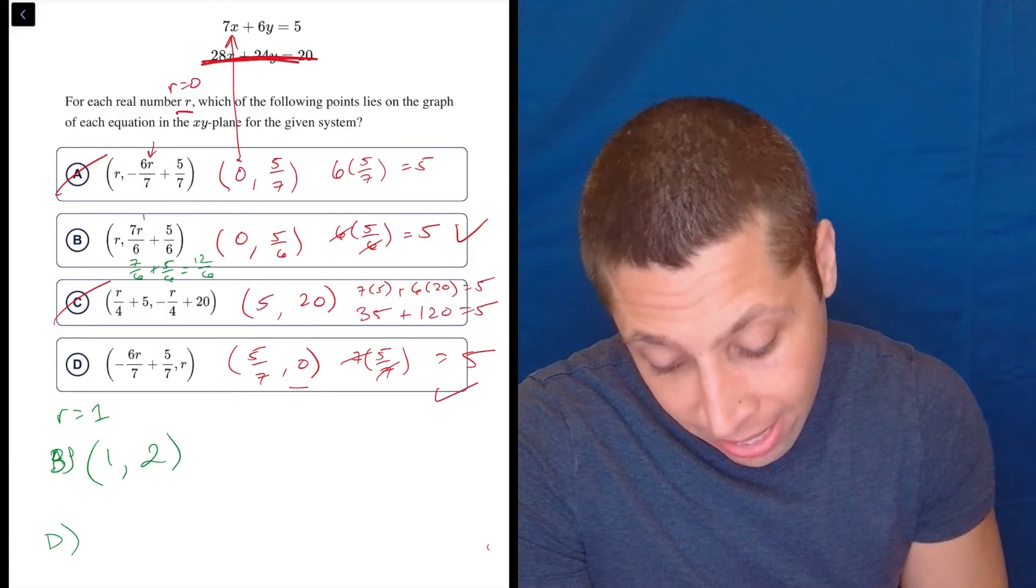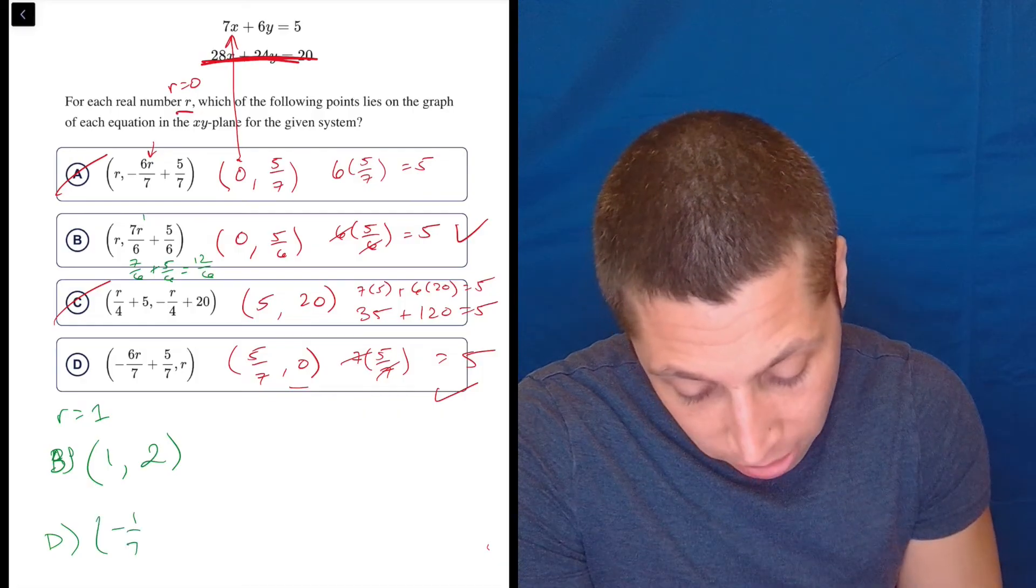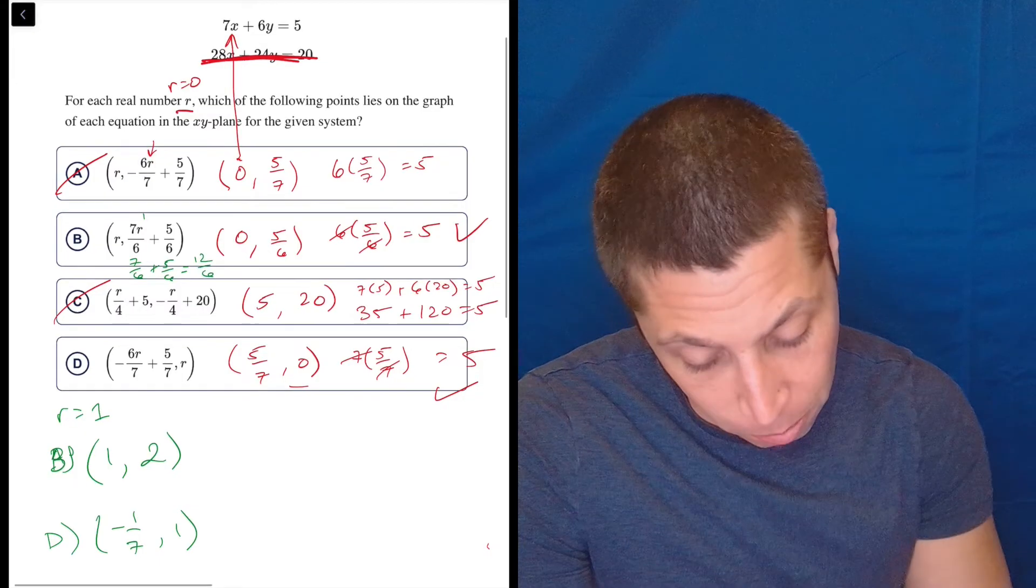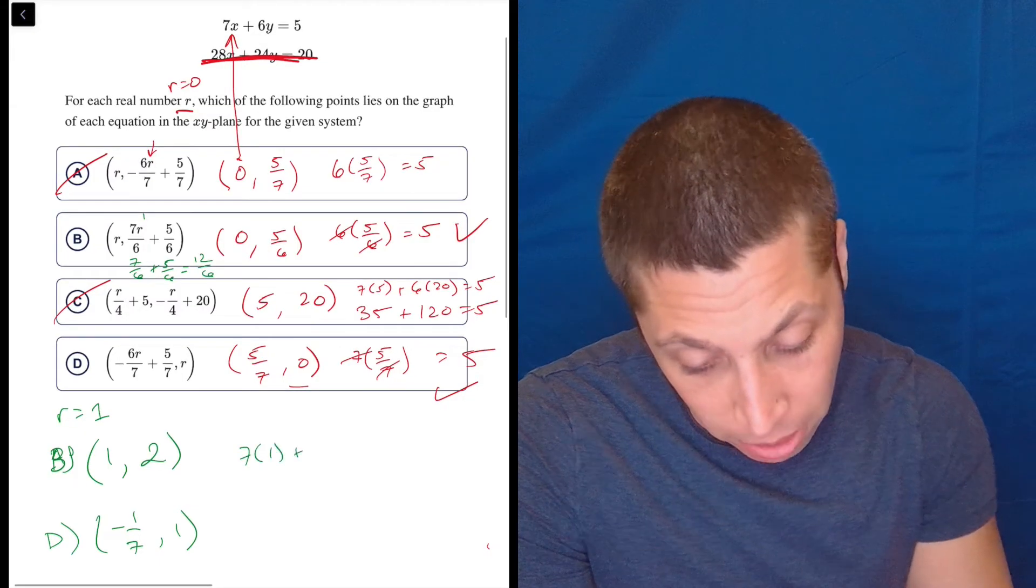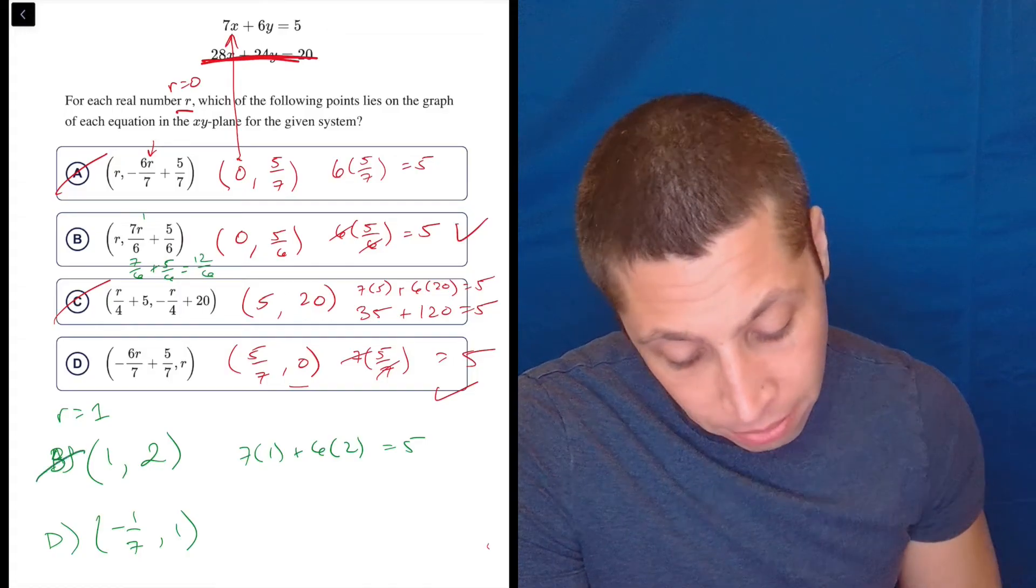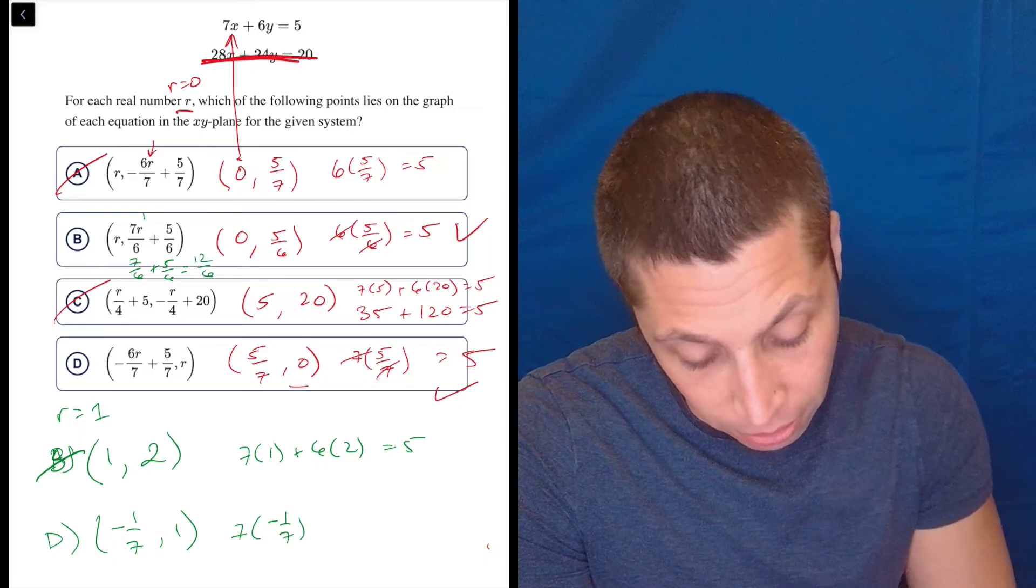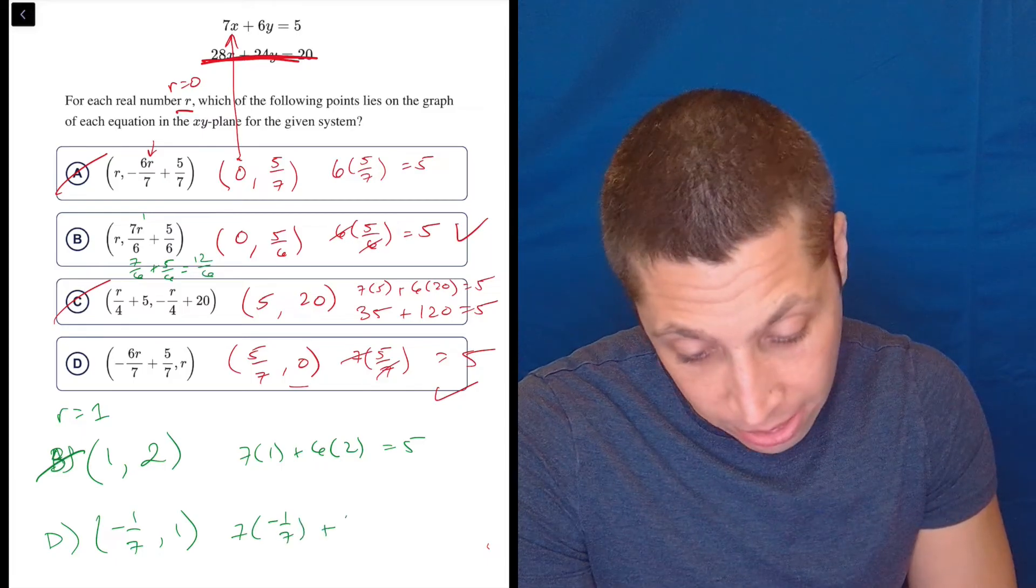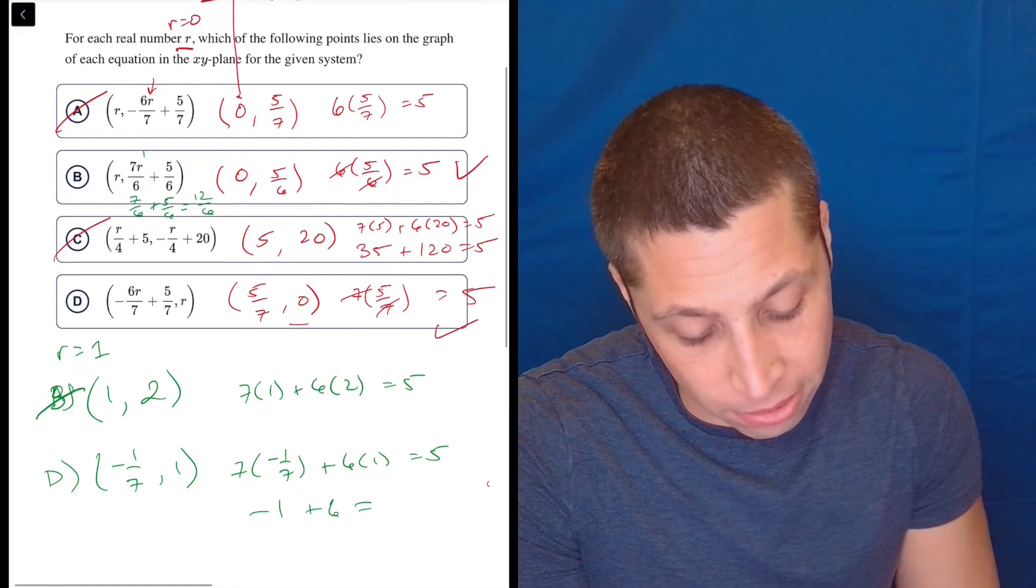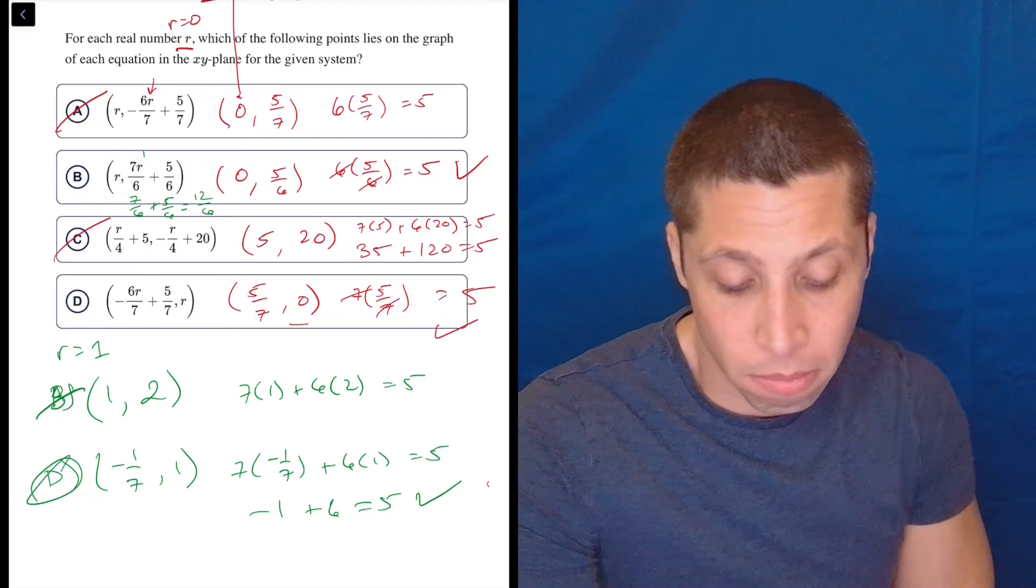So that's kind of convenient. And D would be -6/7 plus 5/7, so that's -1/7 comma 1. So still pretty easy points. Let's go to choice B first and do 7 times 1 plus 6 times 2 equals 5. Well, that's 7 plus 12, so that's not 5. And then here we have 7 times -1/7, which is not as scary as it sounds, plus 6 times 1 equals 5. This becomes -1 plus 6 is 5. Done. A little tedious, but there you go.